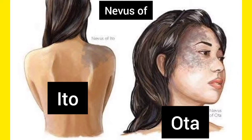The terminologies are Nevus of Ito and Nevus of Ota. Nevus of Ito is hyperpigmentation that occurs on the shoulder — you can see the left side picture, that is Ito. When it is Ota, it occurs around the eye — you can see the right side picture.